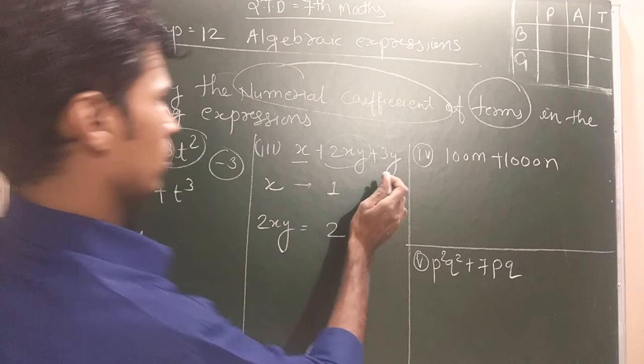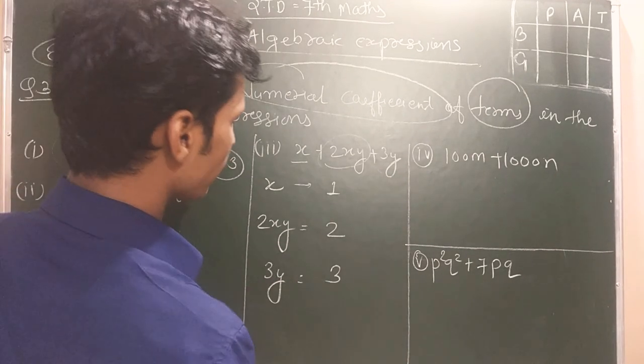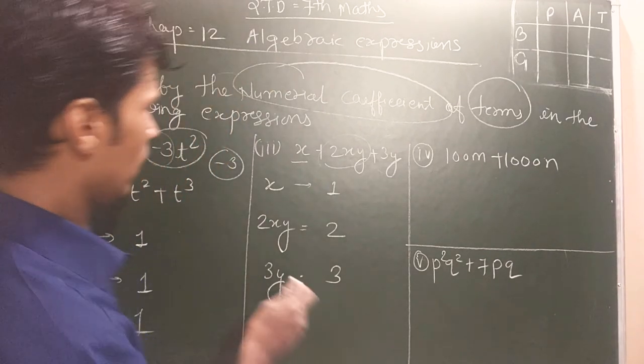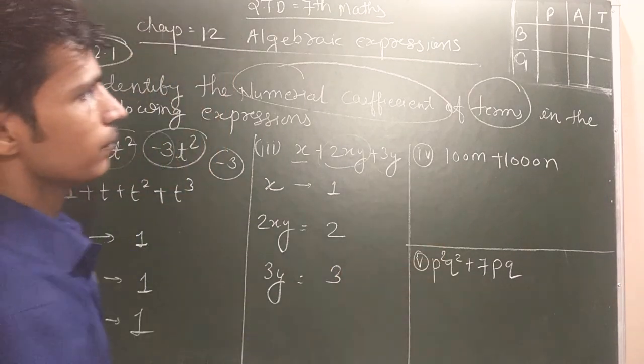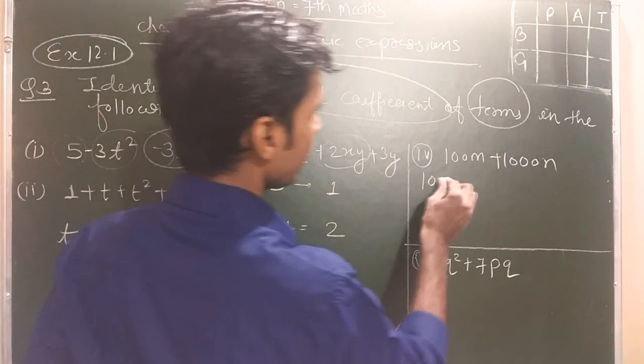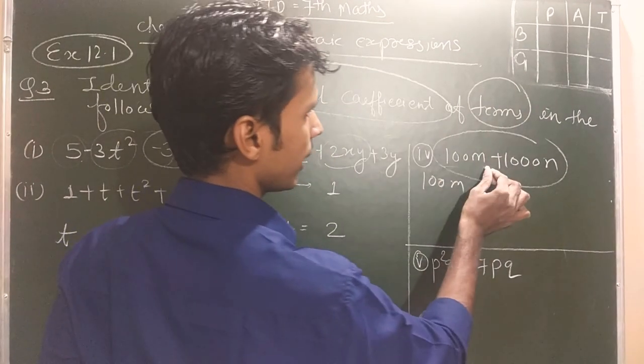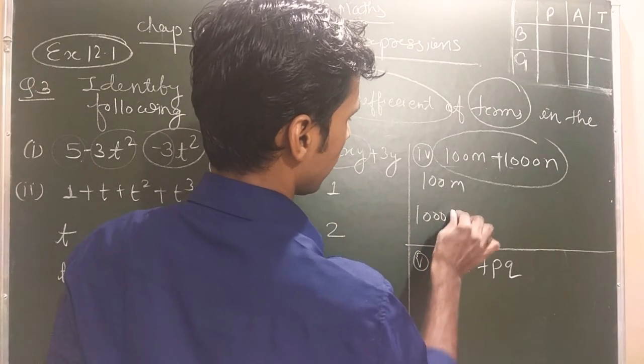Now, why is it different? Three y. Coefficient three. Now student. Now question number four. This question has two terms: 100m plus 1000n.